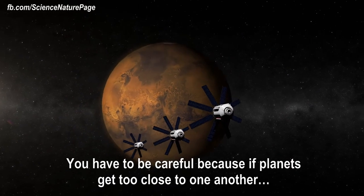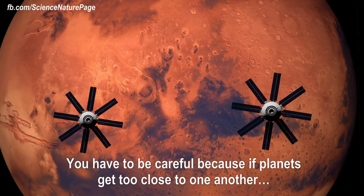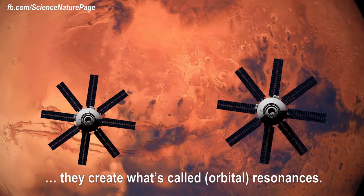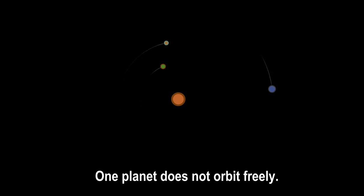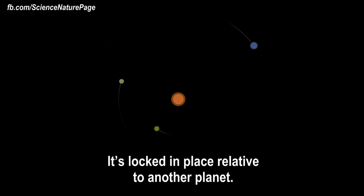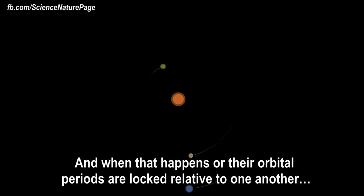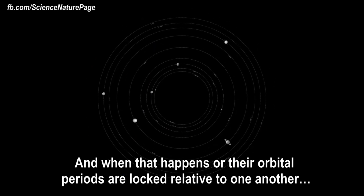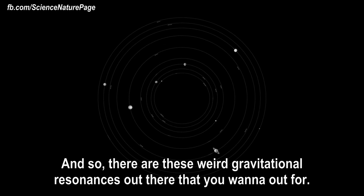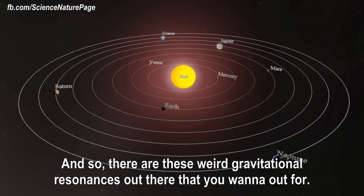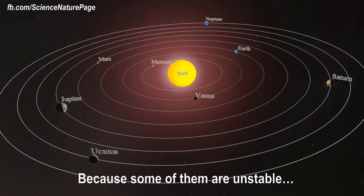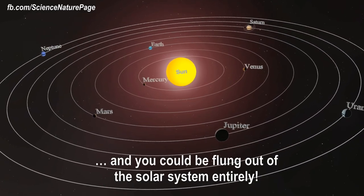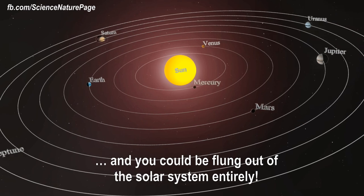You have to be careful because if planets get too close to one another, they create what are called resonances. And when you have a resonance, it means one planet does not orbit freely, it's locked in place relative to another planet. And when that happens, or their orbital periods are locked relative to one another. And so there are these weird gravitational resonances out there that you want to watch out for, because some of them are unstable and you can be flung out of the solar system entirely.